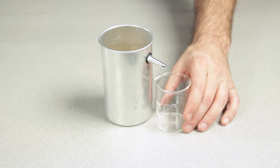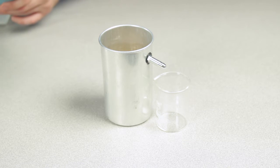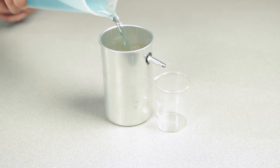To use the can, place a small beaker or graduated cylinder beneath the angled downspout and then fill the can with water until water begins to pour from the spout.